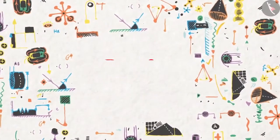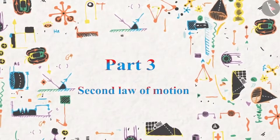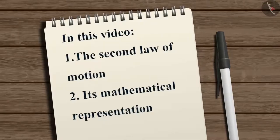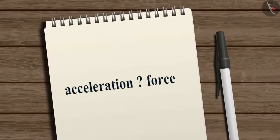Force and laws of motion, part 3: second law of motion. In the previous video we learned about the first law of motion and saw the relation between inertia and mass. In this video we will learn about the second law of motion and how it is represented mathematically. We have already learned that due to the application of an external unbalanced force on an object, its velocity changes, which also means the object gains an acceleration. We will now learn how the acceleration of a body depends on the force applied and how we can measure this force.